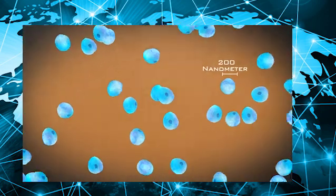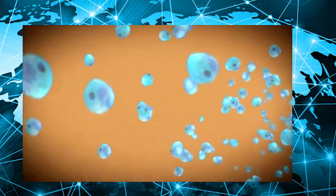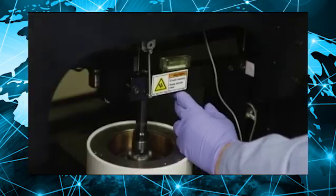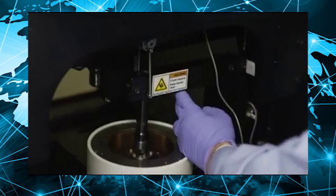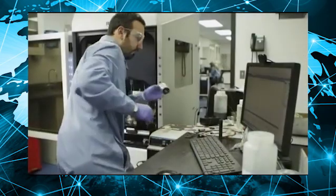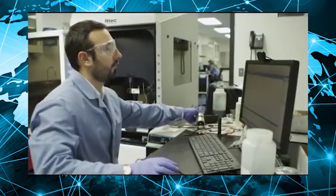At 20 to 200 billionths of a meter, nanoparticles are beyond small. The reactor and chemistry used to make the particles causes these tiny spheres to be hollow, with a multi-layered outer skin.